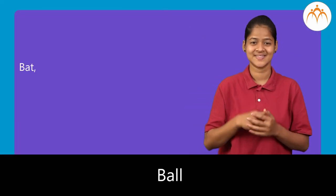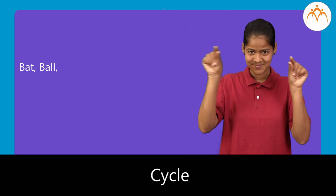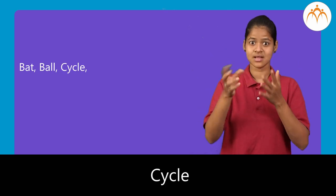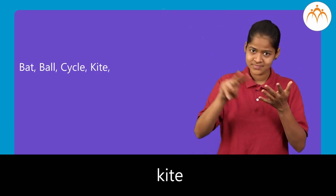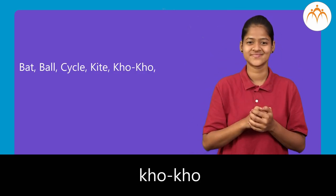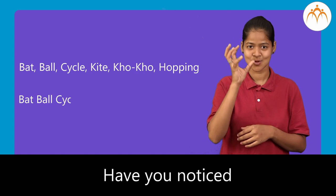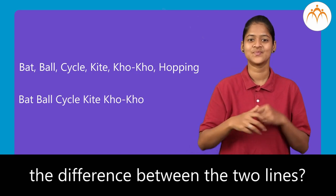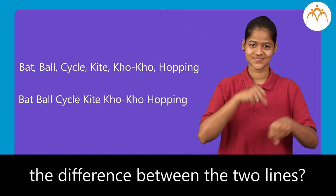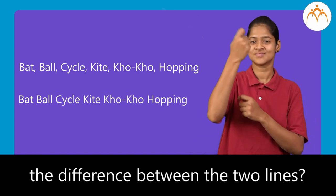Bat, ball, cycle, kite, khokho, hopping. Have you noticed the difference between the two lines?